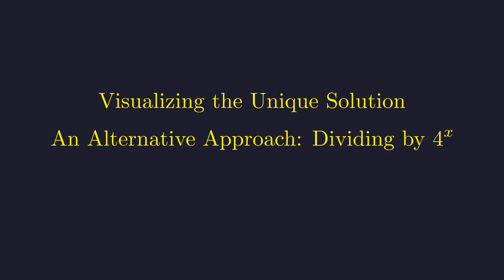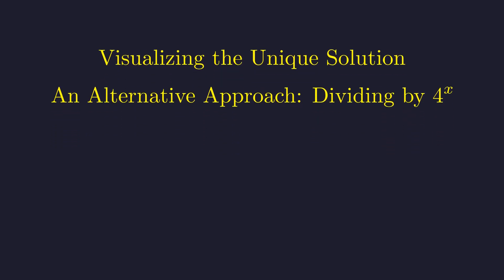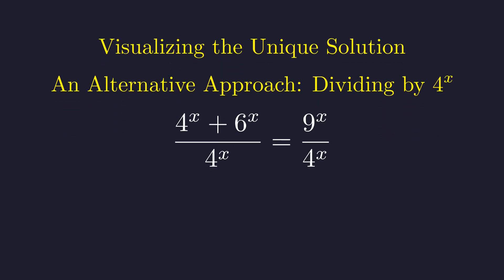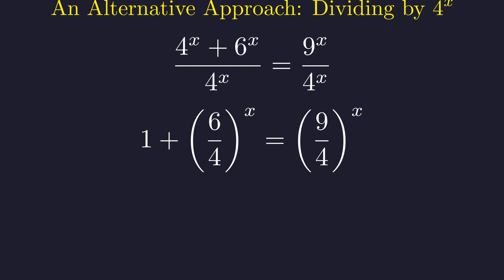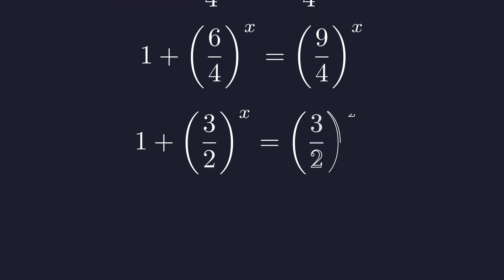Before we conclude, let me show you an alternative approach that leads to an even more elegant form of the solution. Instead of dividing by 9 raised to the x, what if we divided by 4 raised to the x? Dividing all terms of our original equation by 4 to the power of x, we get this equivalent form. Simplifying the left side and using the quotient rule of exponents on the right, we can rewrite this as 1 plus 6 over 4 to the power of x equals 9 over 4 to the power of x.